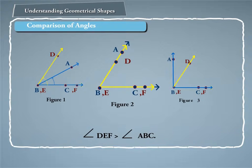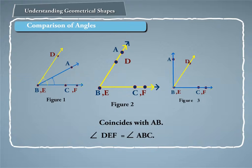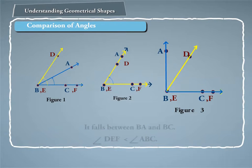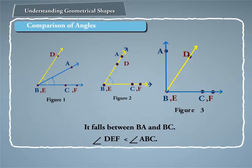In figure two, it coincides with AB. So, angle DEF is equal to angle ABC. And in figure three, it falls between BA and BC. So, angle DEF is smaller than angle ABC.